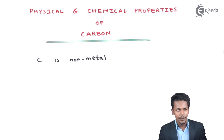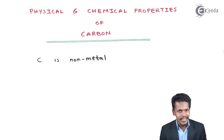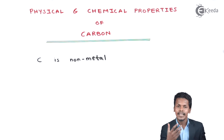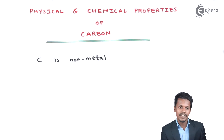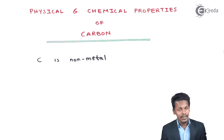Carbon doesn't react with any compound very easily. There are two forms of carbon: amorphous and crystalline. The crystalline form — whether diamond or graphite — does not react easily. Carbon has various uses and applications, which we will discuss in a separate lecture.